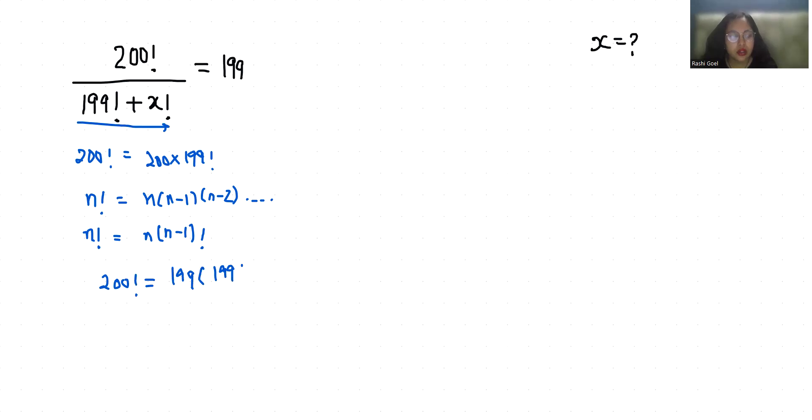Now this 200 factorial is 200 times (200 minus 1) times (200 minus 2) factorial, which equals 199 times 198 factorial.